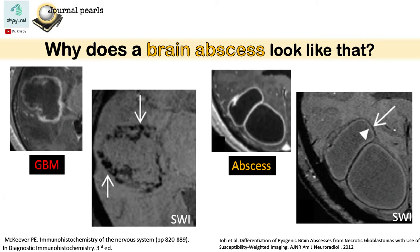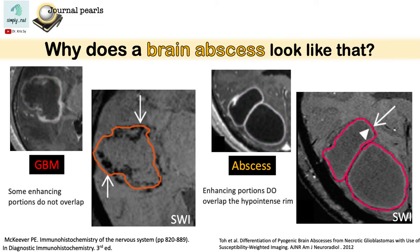Let us look at another difference between the two. If we draw a line along the enhancing portion of the lesion and overlay it on the SWI image, on the abscess, the enhancing rim overlaps with the hypo-intense rim. While in GBM, there are portions of the enhancing rim that do not overlap with the hypo-intense rim. So that is another clue to differentiate GBM from abscess.